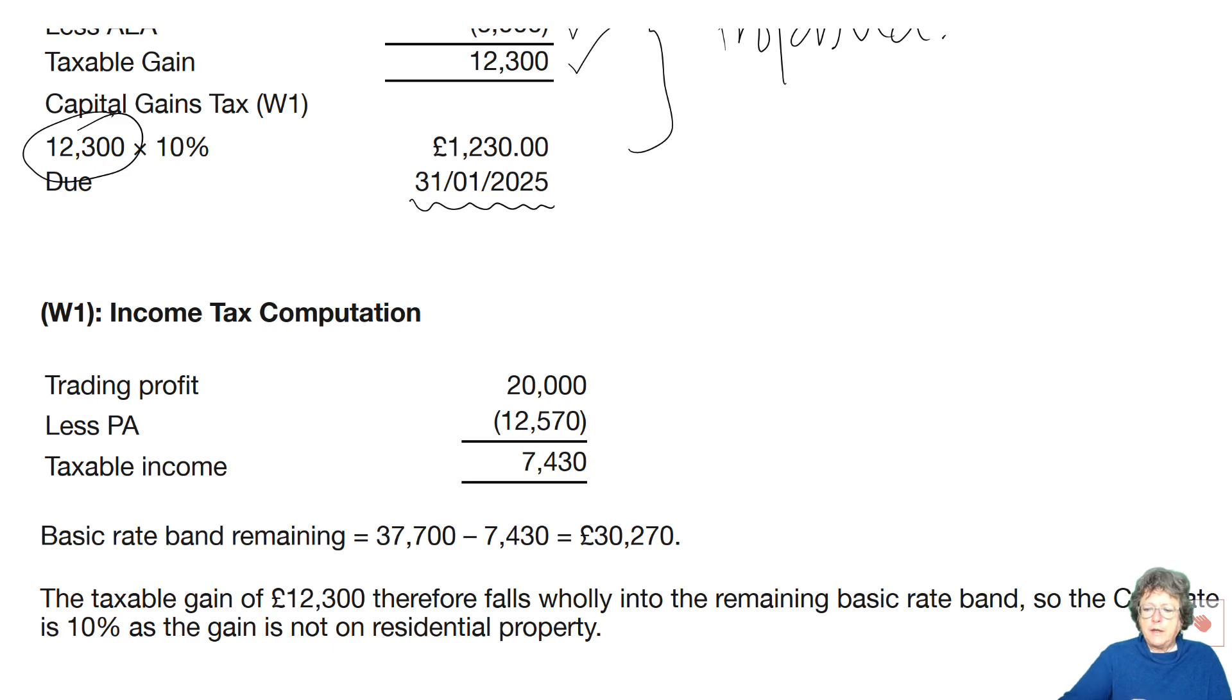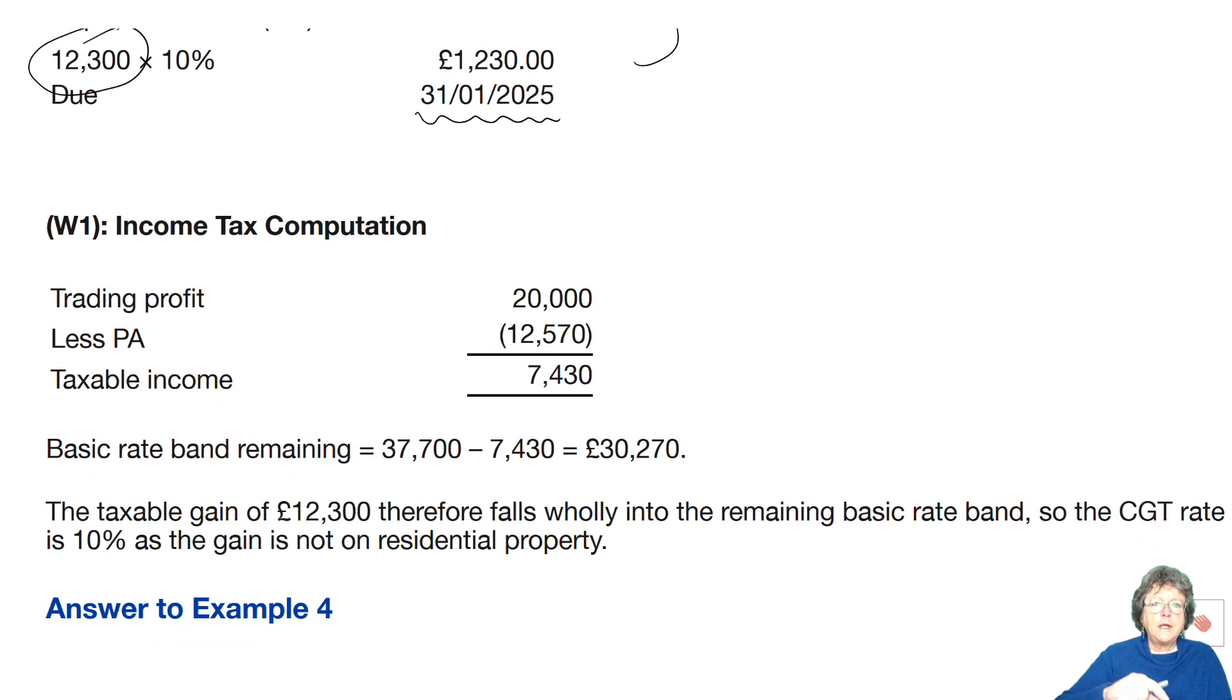Now the working. How much basic rate band does Matthew have left so that we can then work out what rate to charge for capital gains tax? So it said it was trade profits. It didn't say taxable income, it said trade profits. So we've taken off the personal allowance giving us £7,430. Now that would be taxed at the basic rate. That's the basic rate band which means that's how much basic rate band we have left. As that is all within that period then he's only going to pay tax at 10%. So in order to get extra marks you would need to show that.